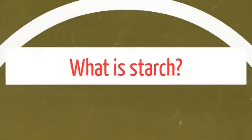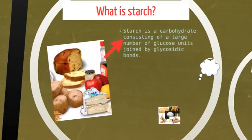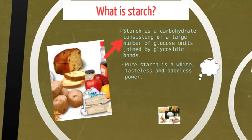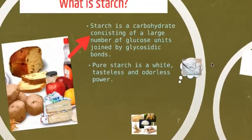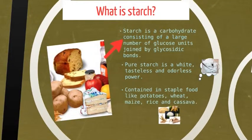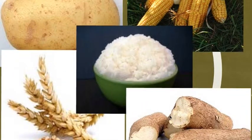Okay, today's topic is starch processing hydrolysis. Starch is a carbohydrate consisting of a large number of glucose units joined by glycosidic bonds. Pure starch is a white, tasteless and odorless powder that is insoluble in cold water or alcohol. It is the most common carbohydrate in the human diet and is contained in large amounts in staple foods like potatoes, wheat, rice, maize and cassava.